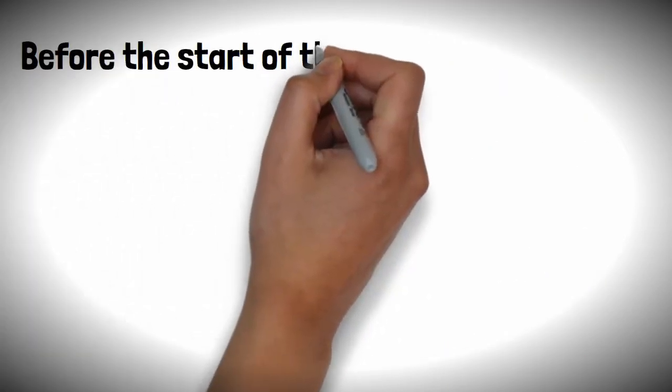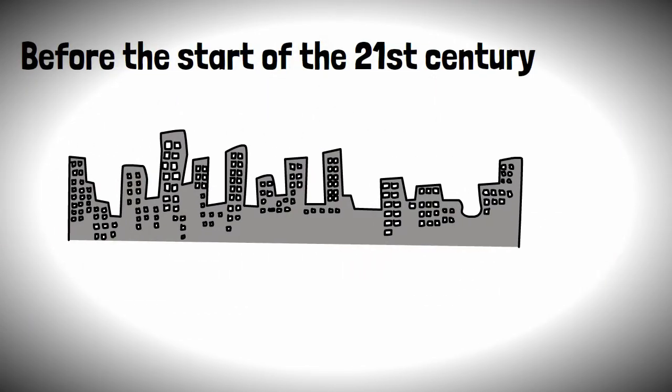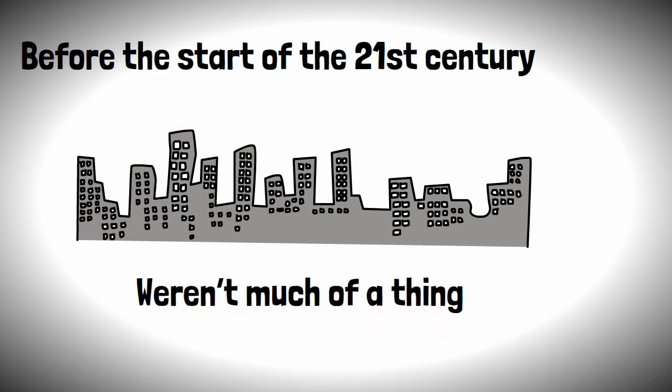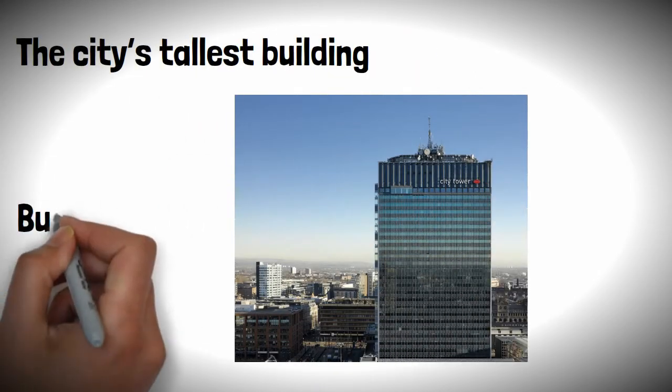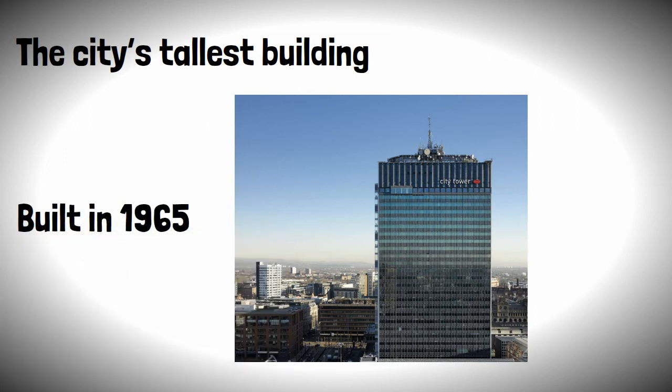Before the start of the 21st century, tall buildings in Manchester weren't much of a thing, with the city's tallest building being the City Tower, which was built way back in 1965, standing at 123 meters.